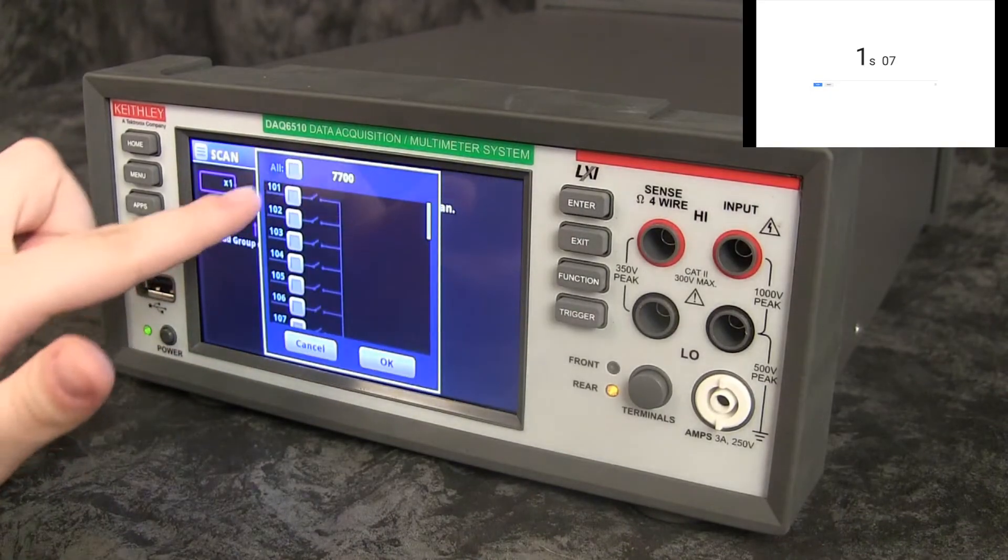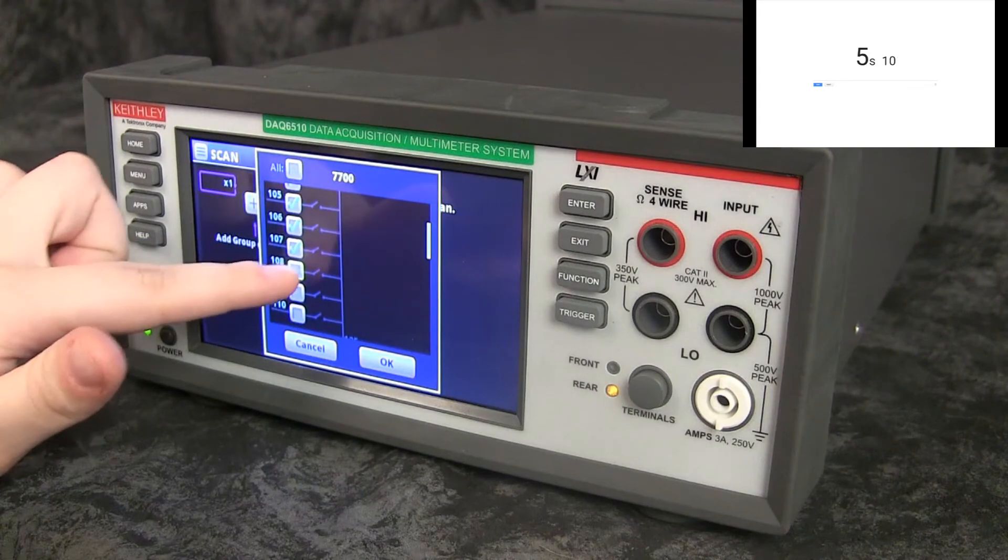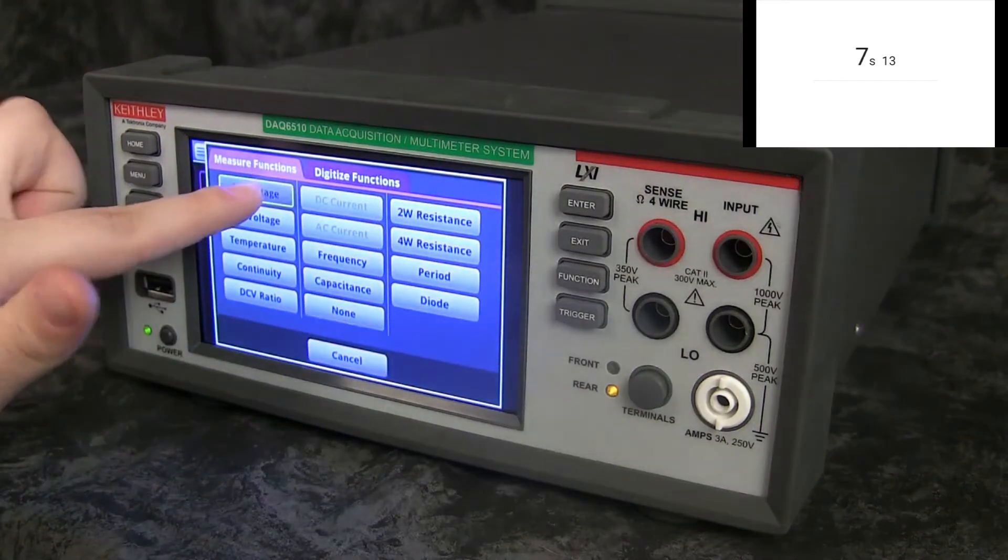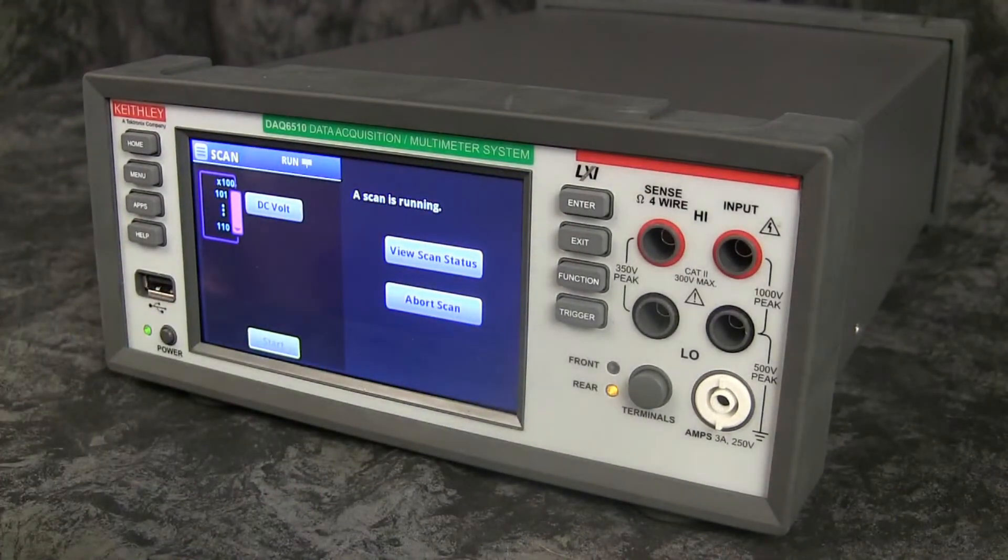An experienced user creating the same scan configuration using the Keithley DAC 6510's touch user interface is almost three times faster than when using the Keysight 34972A's front panel.